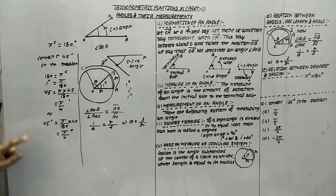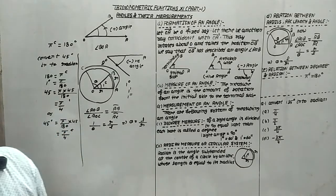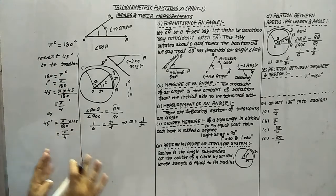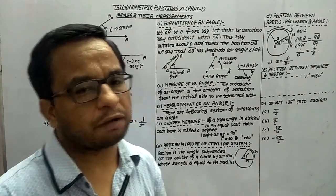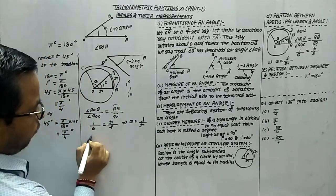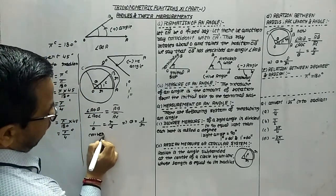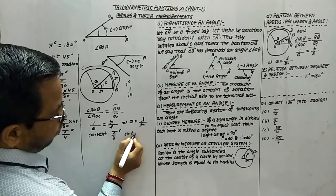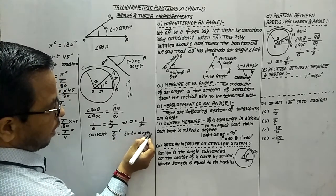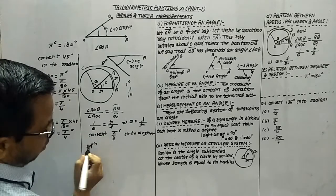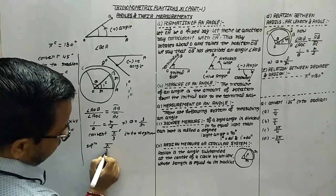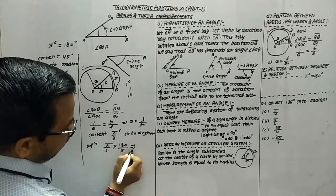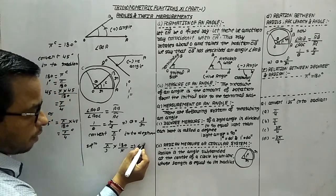Whatever method is used directly, the basic idea is applying the unitary method only. If you use this method, no problem at all — you will get full marks. Suppose we have to convert pi by 3 radian into degrees. Then directly apply: pi upon 3 multiplied by 180 upon pi, which gives 60 degrees.